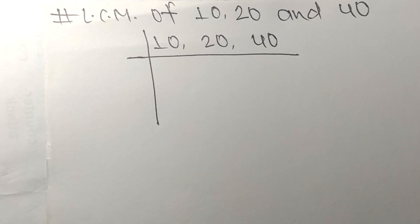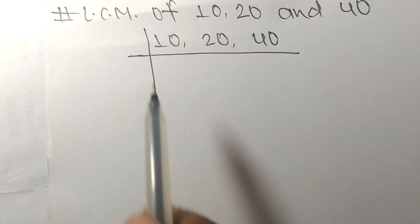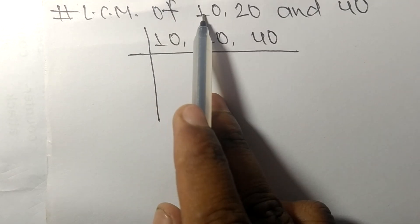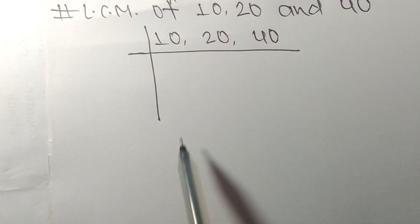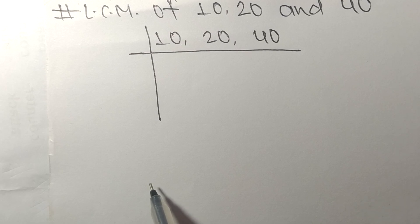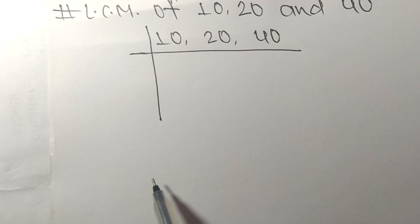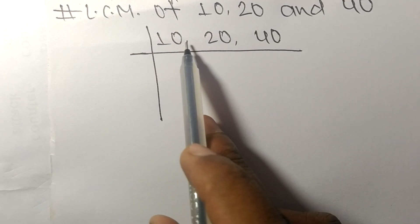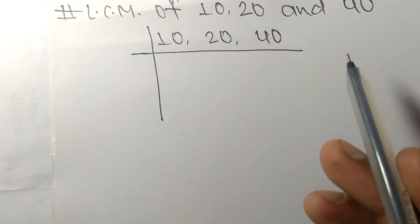So today in this video we shall learn to find the LCM of 10, 20, and 40. To find LCM, we have to choose the lowest number that can exactly divide at least any two of these numbers.